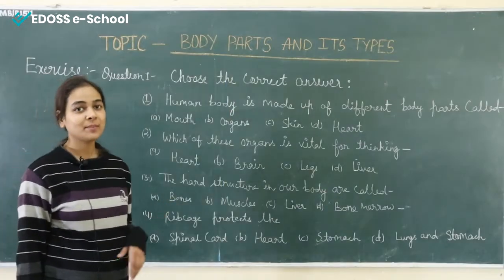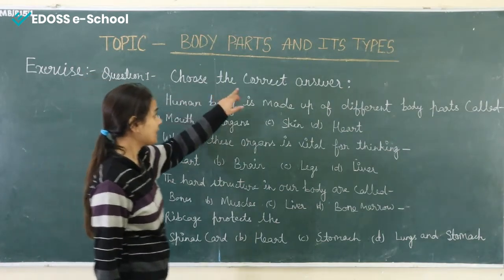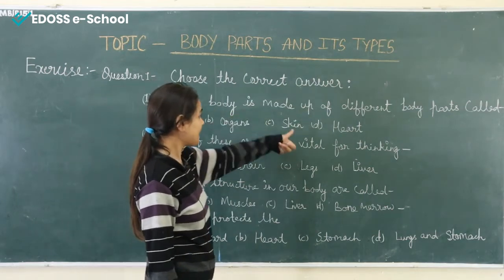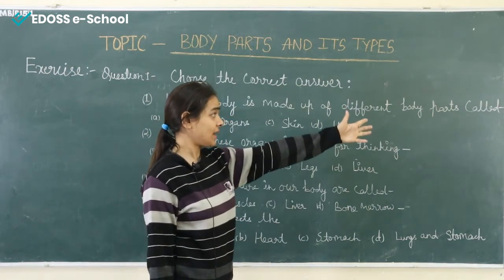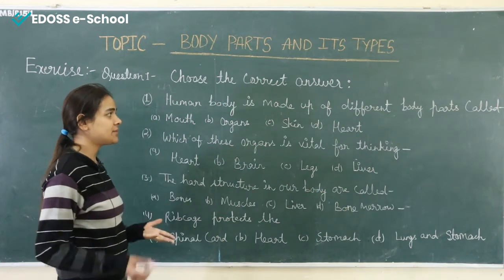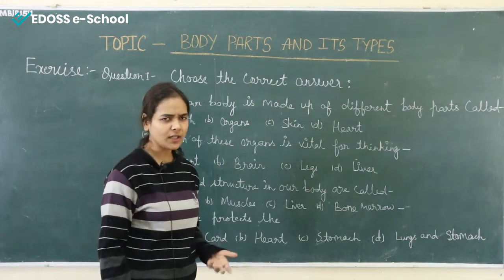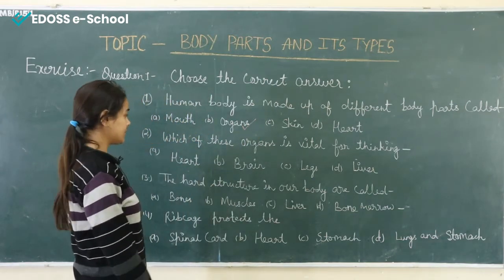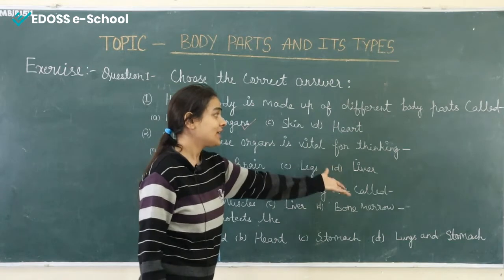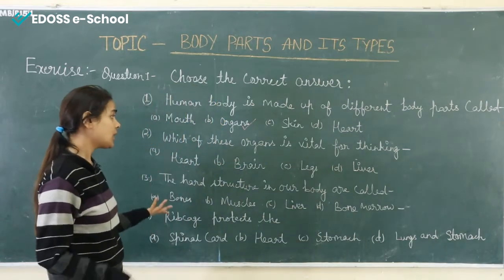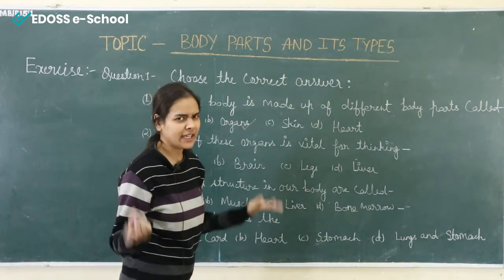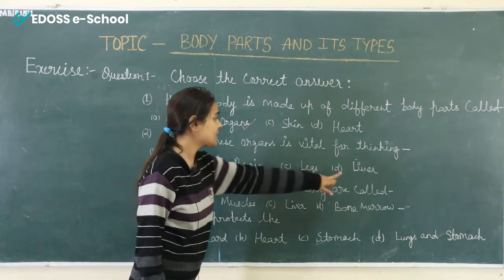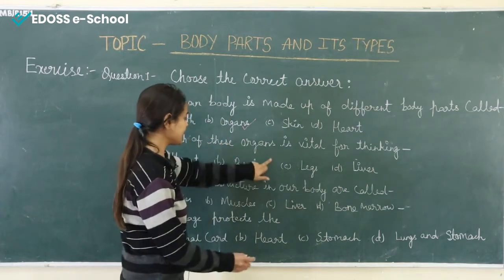Now children, let's do some question answers. First question — choose the correct answer. One: human body is made up of different body parts called — the right answer is organs. Two: which of these organs is vital for thinking — heart, brain, legs, or liver? The right answer is brain.